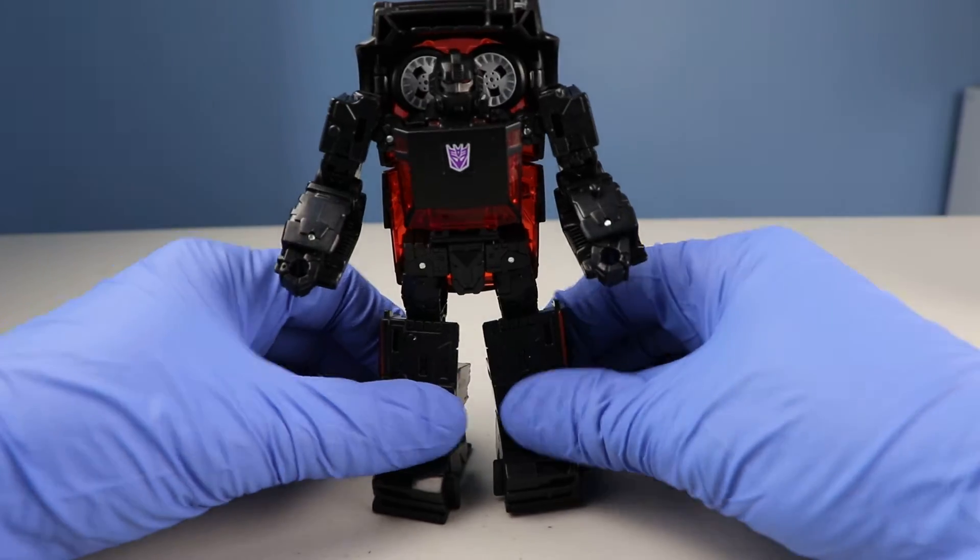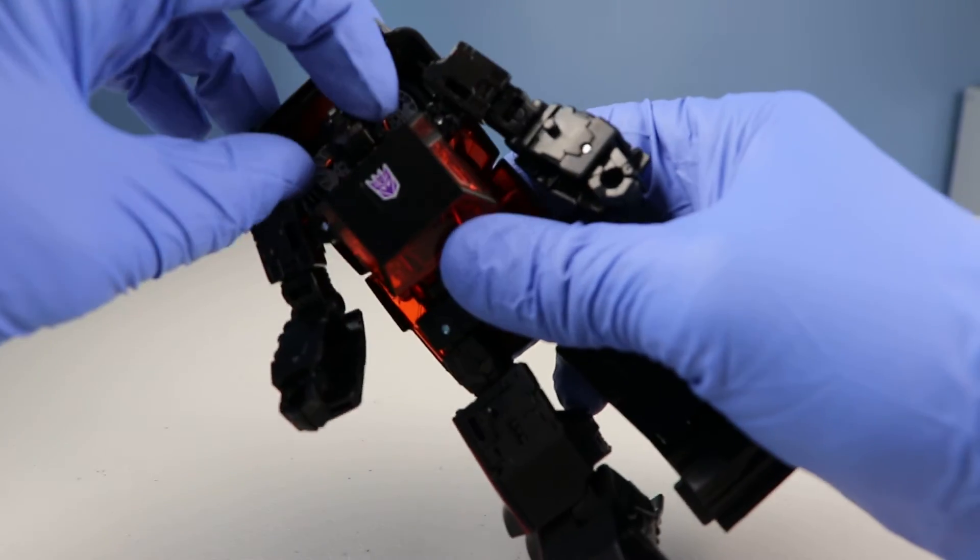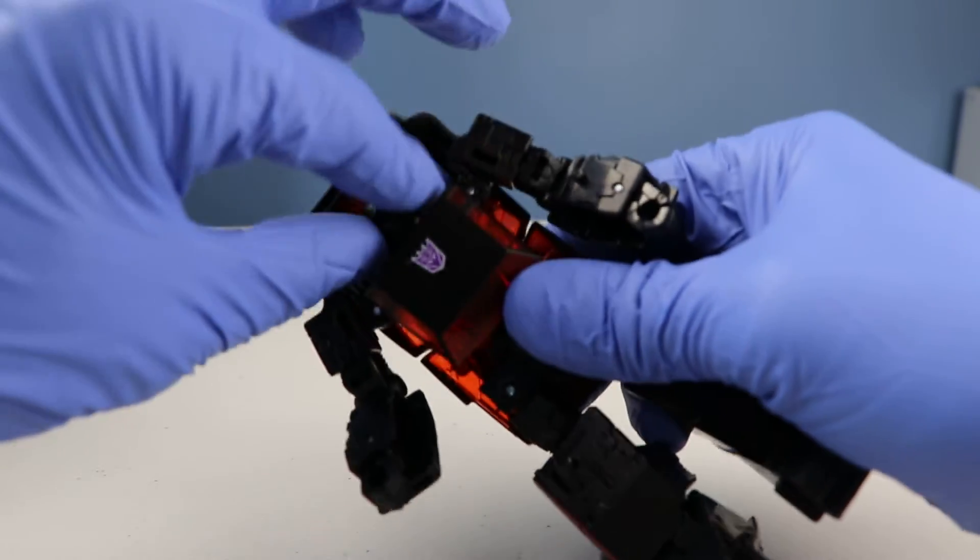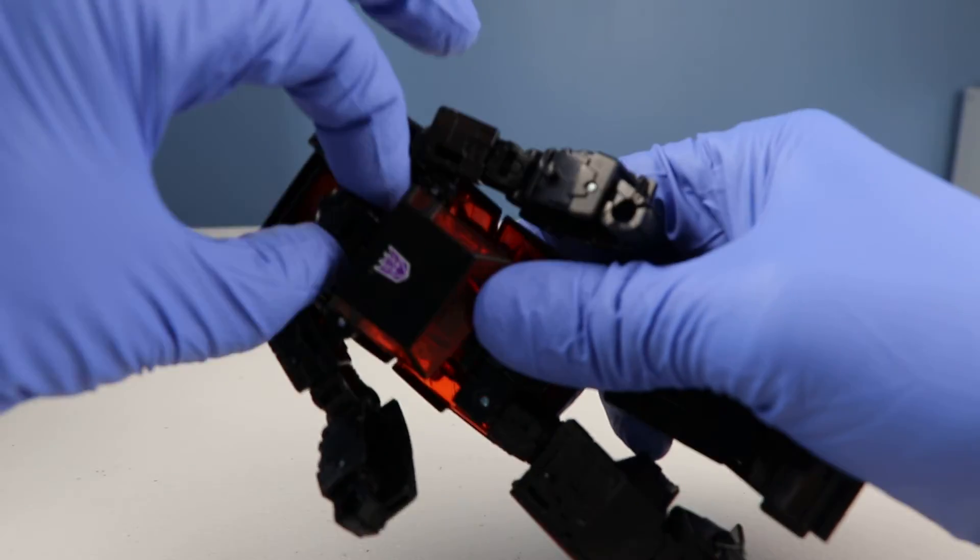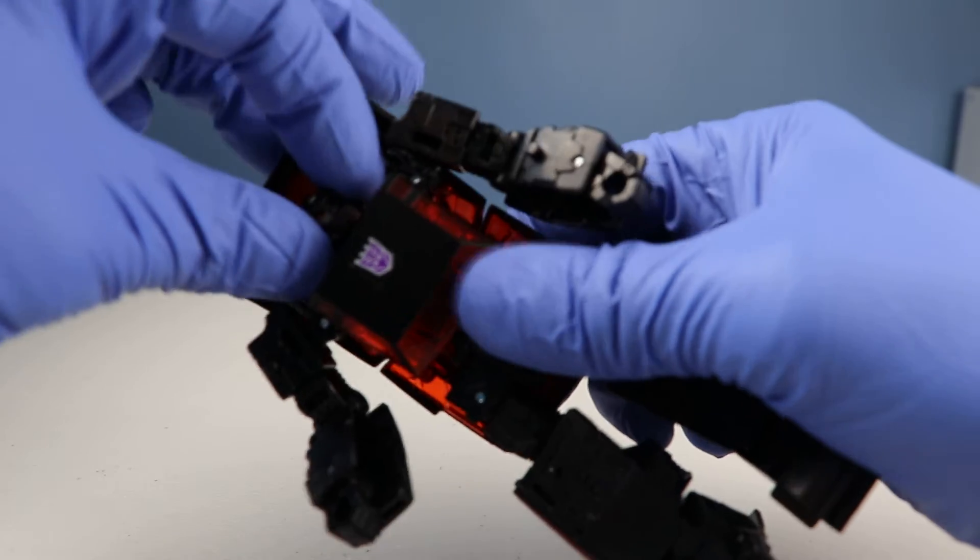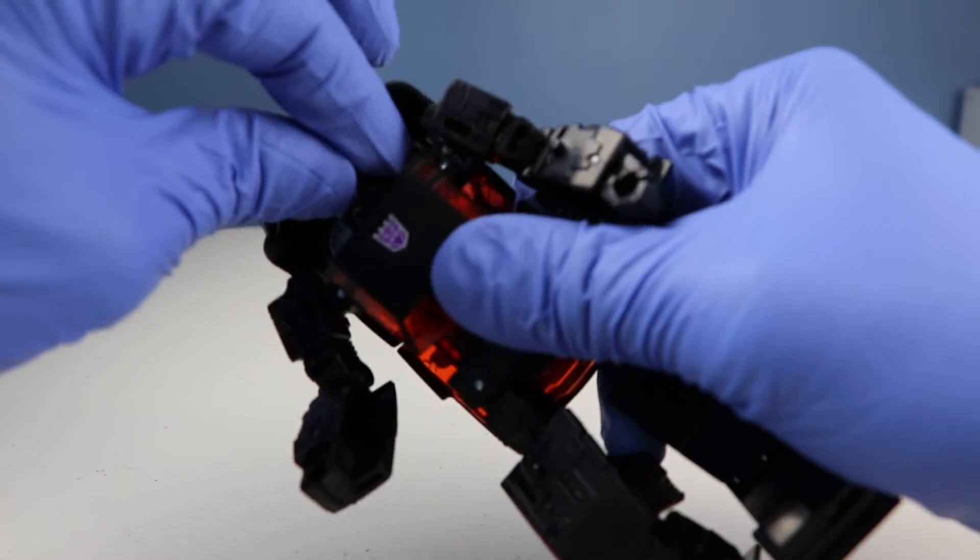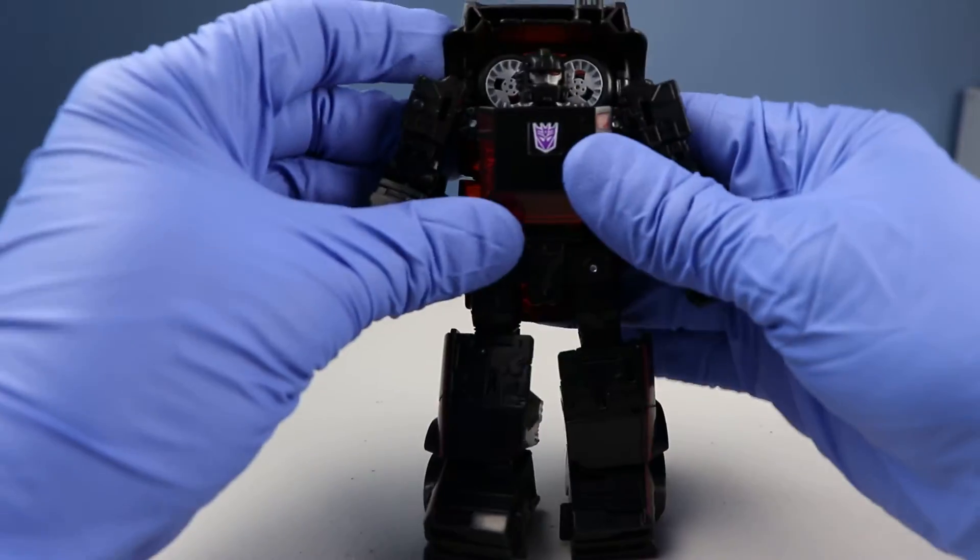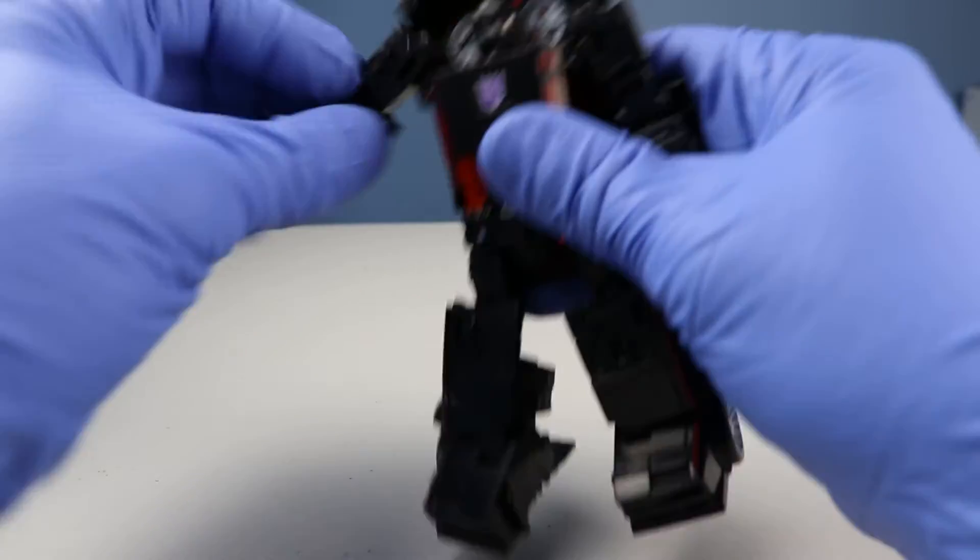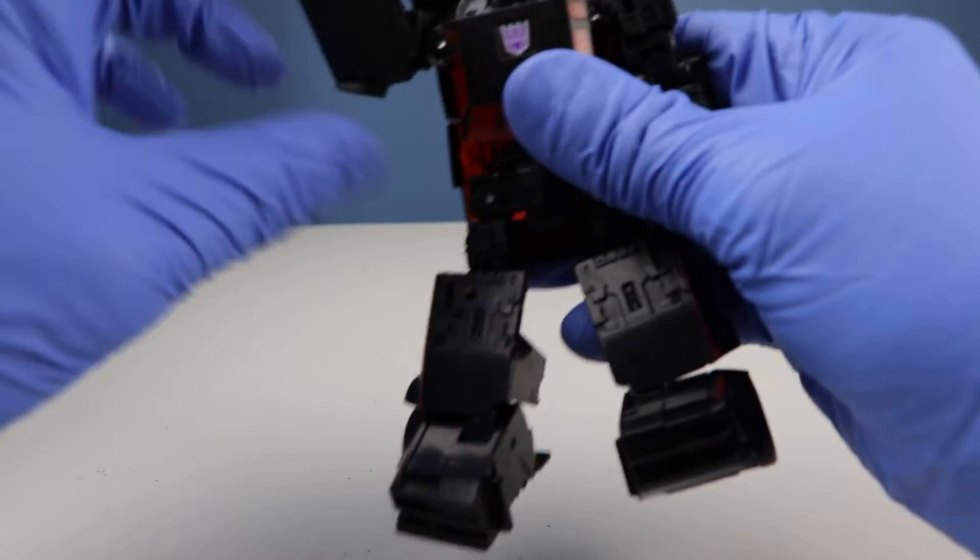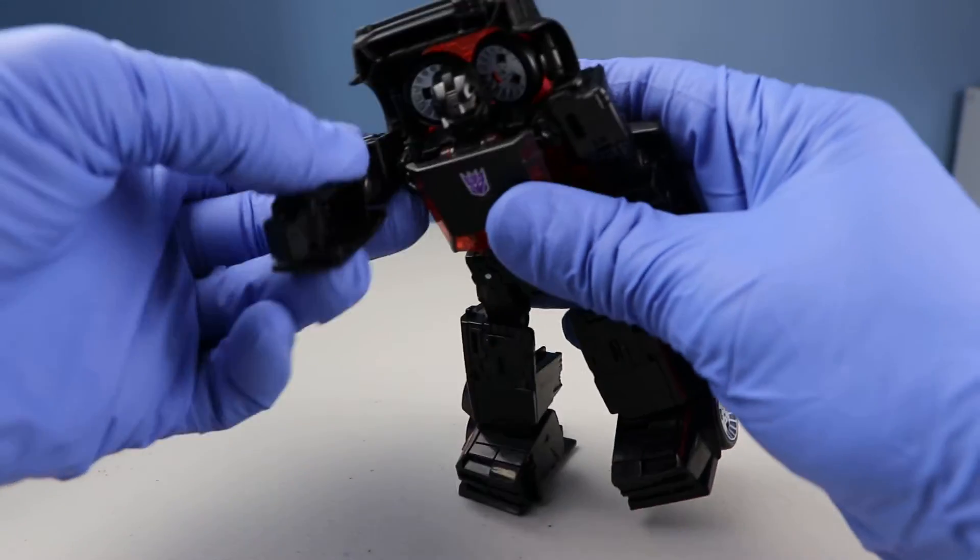And so for articulation, his head can turn all the way around. And there's a slight, looks like it's on a small ball joint here where I can move around a little bit but not that much. Arms can go up or down, full shoulder rotation all the way around, just limited by the backpack however you position it.